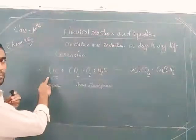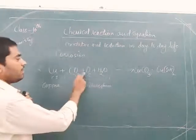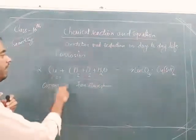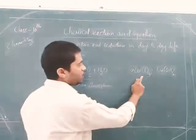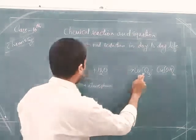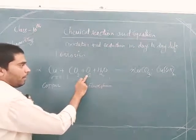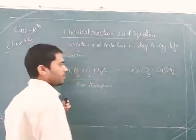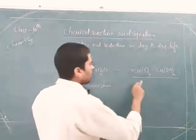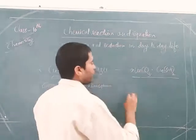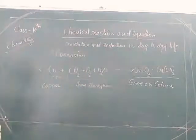Another example is corrosion of copper. Copper reacts with carbon dioxide, oxygen, and water — all three reactants present in the atmosphere. Copper combines with carbon dioxide and oxygen to form copper carbonate, and another copper combines with H₂O and oxygen to form copper hydroxide. Copper corrosion gives a mixture of copper carbonate and copper hydroxide, and this mixture is green in color.